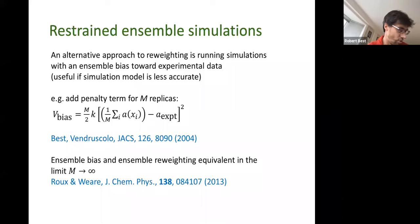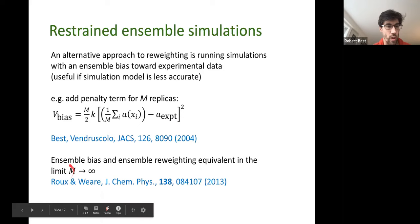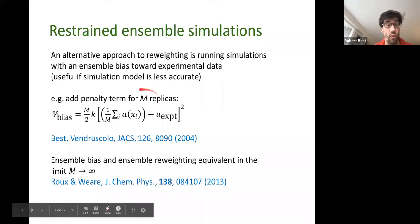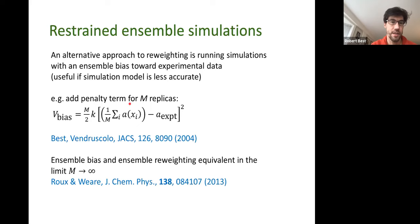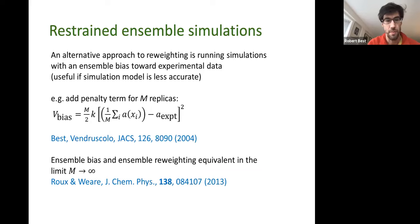This approach is equivalent to restrained ensemble simulations, as shown in a paper by Vendruscolo and colleagues, where running an ensemble simulation with replicas applying a bias to the average observable of all replicas in parallel is equivalent to what I described — though one must use a very large number of replicas.